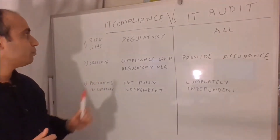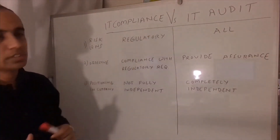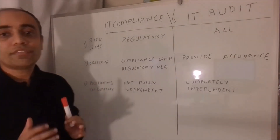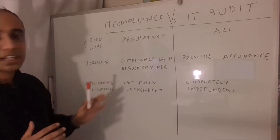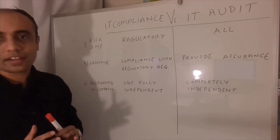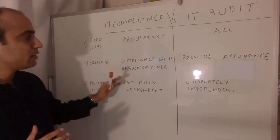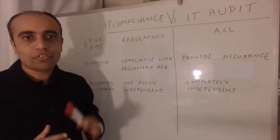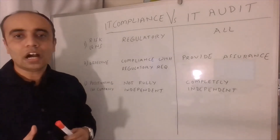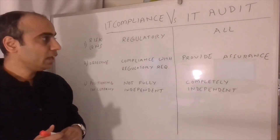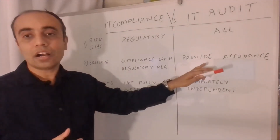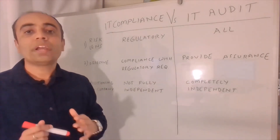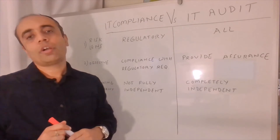The second main difference between IT compliance and IT audit is the objective. The objective of IT compliance is compliance with regulatory requirements — first to identify the requirements and then decide how to comply with them. While the objective of any IT audit is to provide assurance, which is to make sure the compliance requirements have been met.